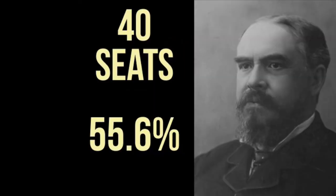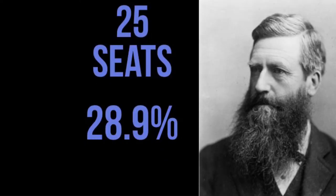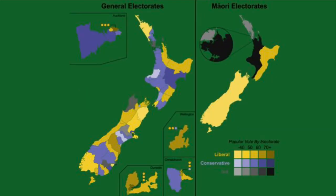The winner was John Ballance and the Liberals, winning 40 out of the 74 seats in Parliament and 55.6% of the popular vote. Harry Atkinson and his Conservative faction finished second with 25 seats and 28.9% of the popular vote. The other nine seats had been won by Independents.